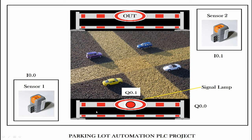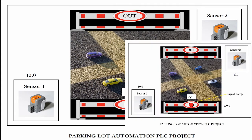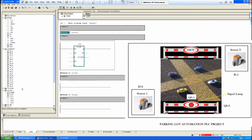The logic is simple: when a vehicle comes in, we count up, and when a vehicle goes outside the parking lot, we count down. That's the program discussed in the last class as your assignment, and now it's time to present the solution. We need a counter that can count both up and down — a Counter Up/Down instruction.